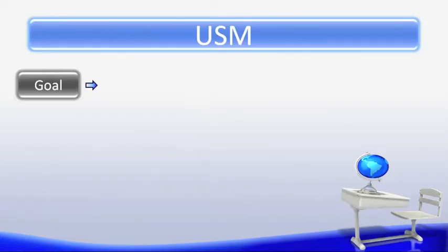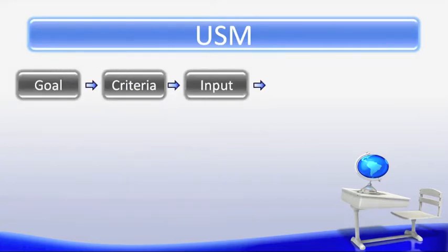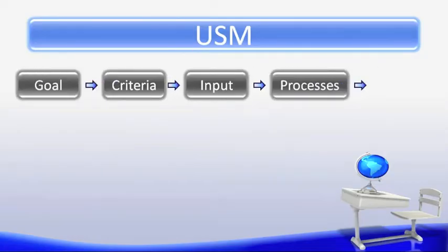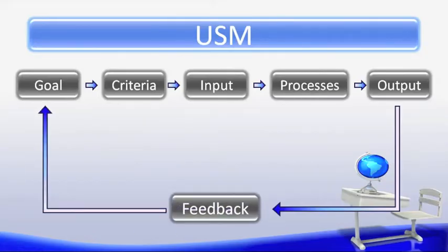The USM is made up of 6 steps. These steps define a system. Every new or improved technology must use the USM in order to produce a technology. The first step in the USM is the goal. The next step is the criteria. Following that step is our inputs. Our inputs has 7 subsystems with it. The following step would be processes. And the next we have outputs. And finally, rounding out the entire system, we have our feedback.